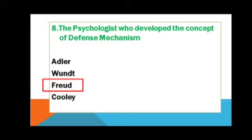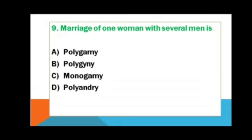Marriage of one woman with several men — options: polygamy, polygyny, monogamy, polyandry. The correct answer is polyandry.